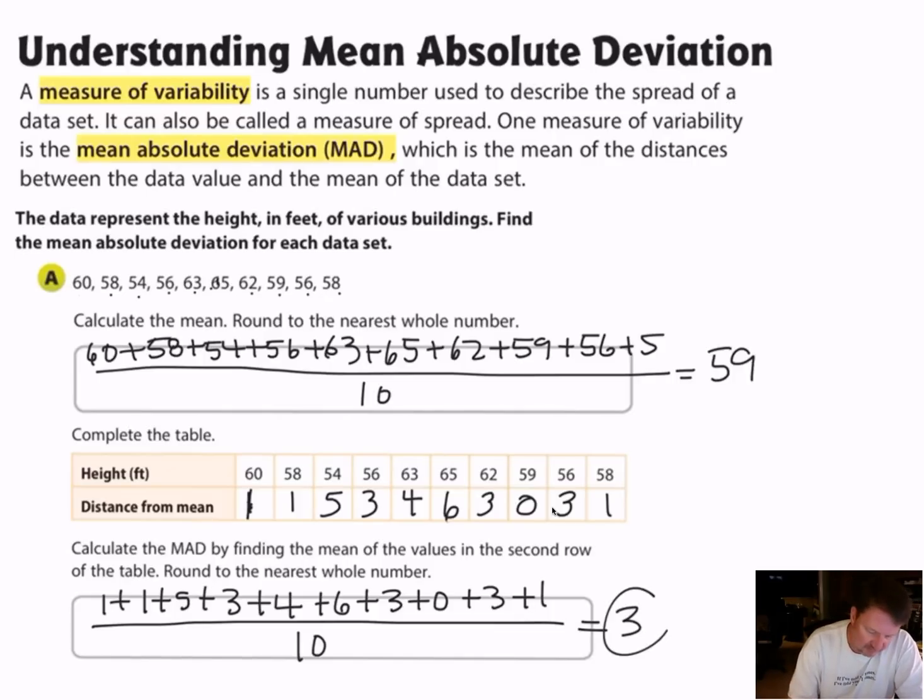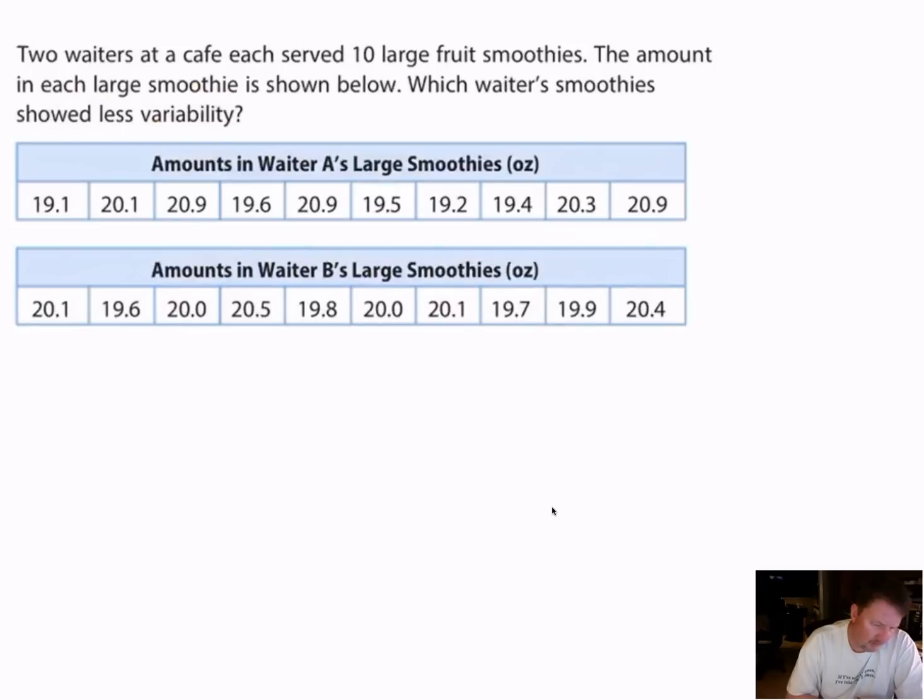So that tells me the variability of this data set is three, which is pretty low. It's hard to determine if that's low or not unless we have some other data to compare it to. Maybe the buildings in this city have a mean absolute deviation of three, but the buildings in another city have a mean absolute deviation of five. That means there's a greater variability in the size of the buildings versus the first city. So that's what we're talking about.